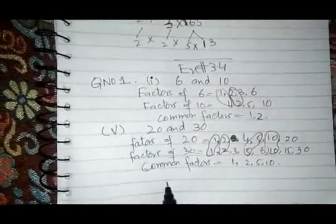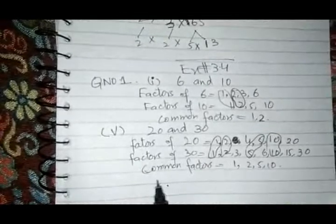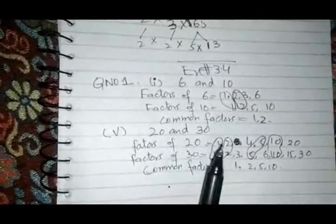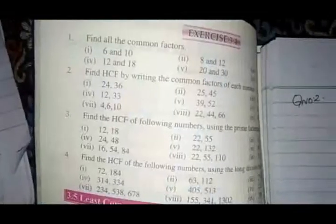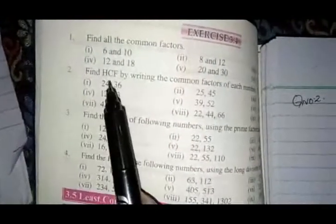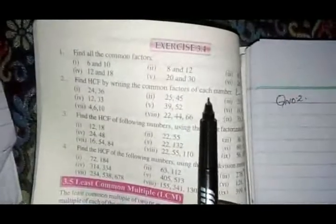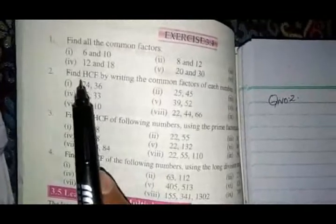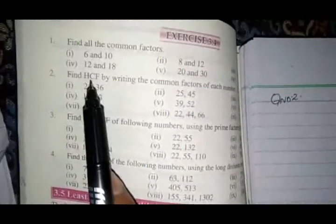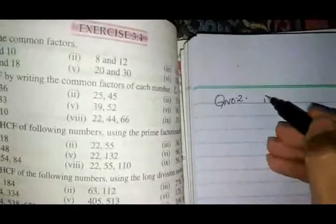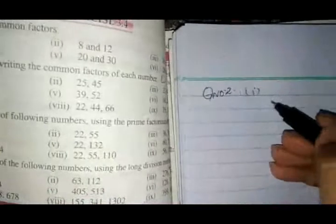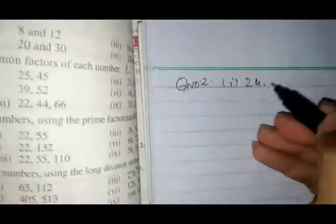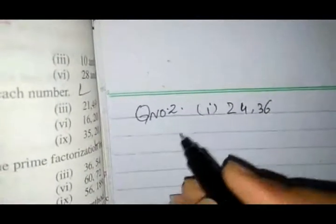Students, I have done question number 1, part 1 and part 5. The remaining parts you can do by yourself. Now we have to start question number 2 of exercise number 3.4. Question number 2 is: find the HCF by writing the common factors of each number. We write the common factors and then find the HCF — the Highest Common Factor.